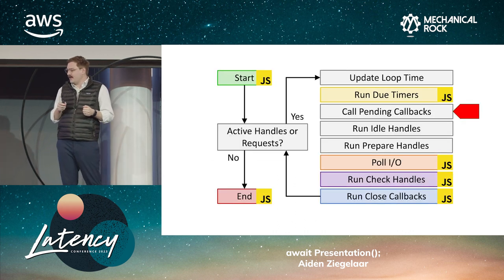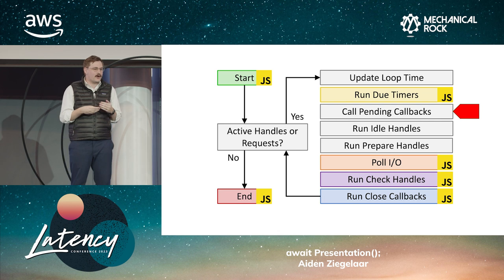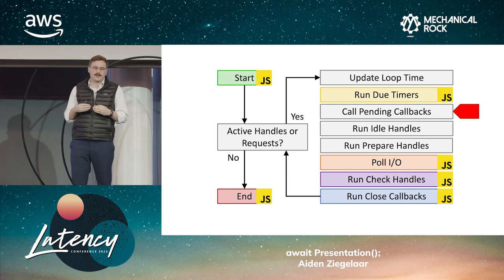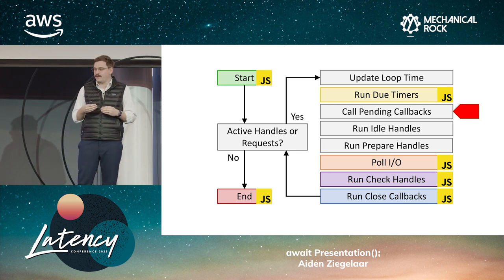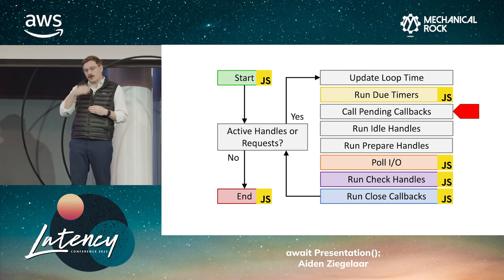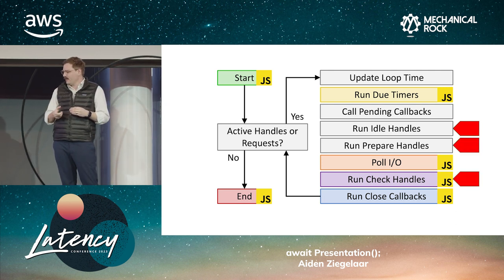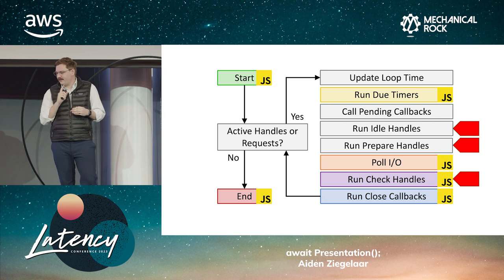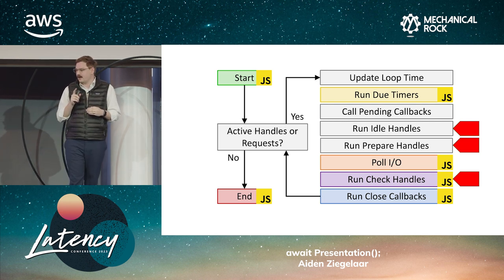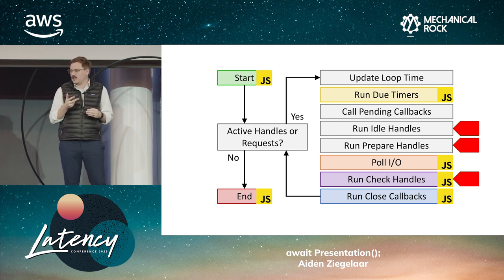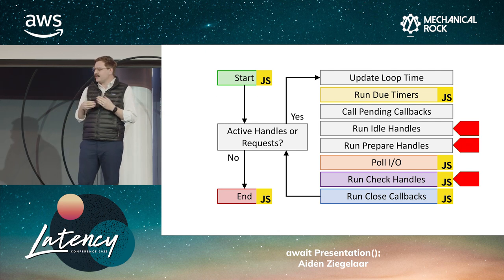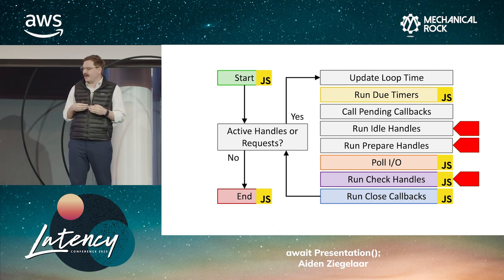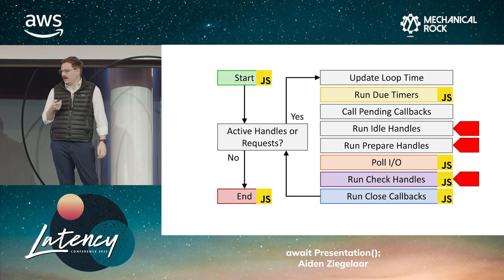We then get to the pending callbacks. This has very few practical implications for Node.js. Sometimes it's not always possible to call a callback that's been registered in that iteration of the event loop, so anything that's been deferred is called at this stage on the next iteration. And then next, there are three very special handles inside LibUV: idle, prepare, and check. They're all used for fairly similar but slightly different purposes and have different implications for the execution of our loop.